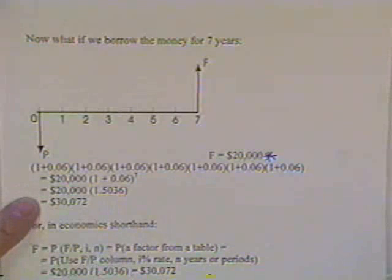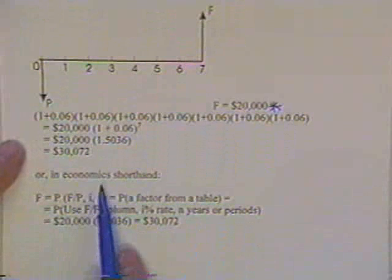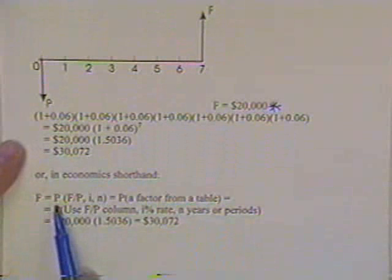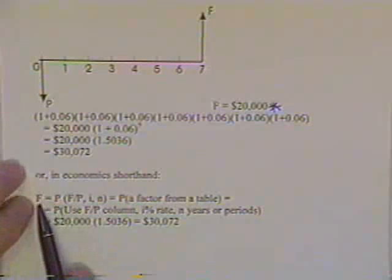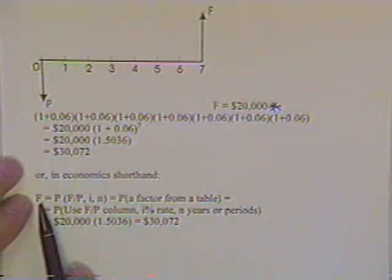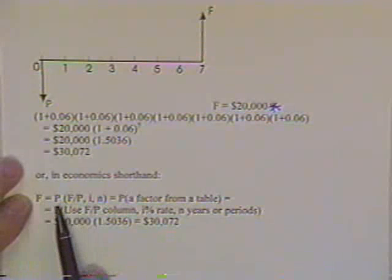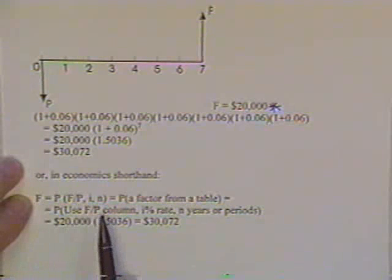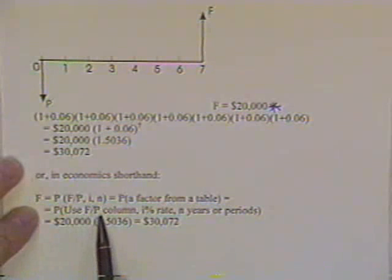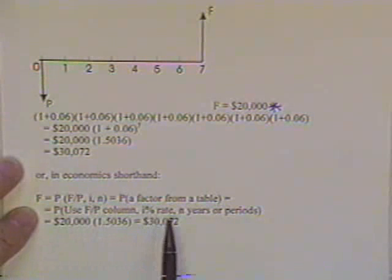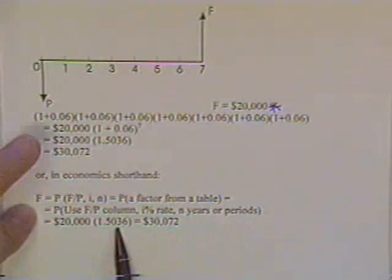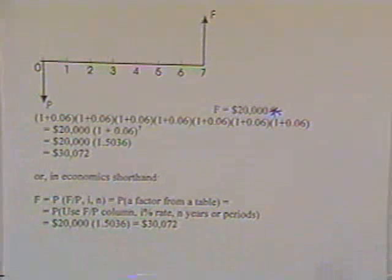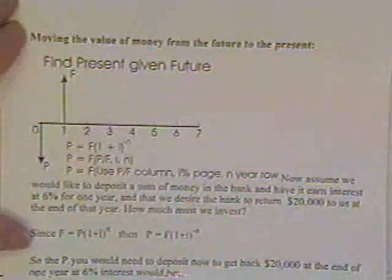That's twenty thousand times 1.5036, which equals about thirty thousand dollars. Or in economics, you would say I have the present value of the money that was borrowed, and I would like to change it into the value of the future money having to be repaid. You do that by multiplying F over P, which tells you to use the F over P column, the I percent rate, and the n years or payment periods. You get the same factors as in the original equation, and therefore you owe the same money: thirty thousand seventy-two dollars.